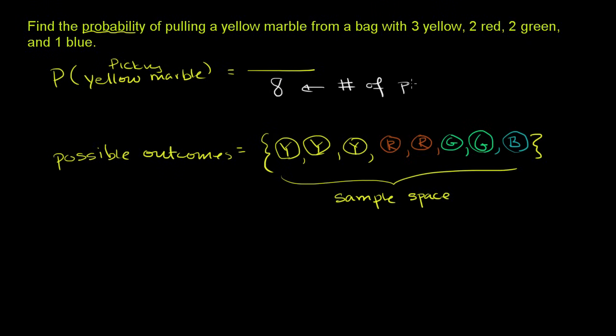number of possible outcomes. You could view it as the size of the sample space. Number of possible outcomes. And it's as simple as saying, well, look, I have eight marbles. And then you say, well, how many of those marbles meet my constraint that satisfy this event here?